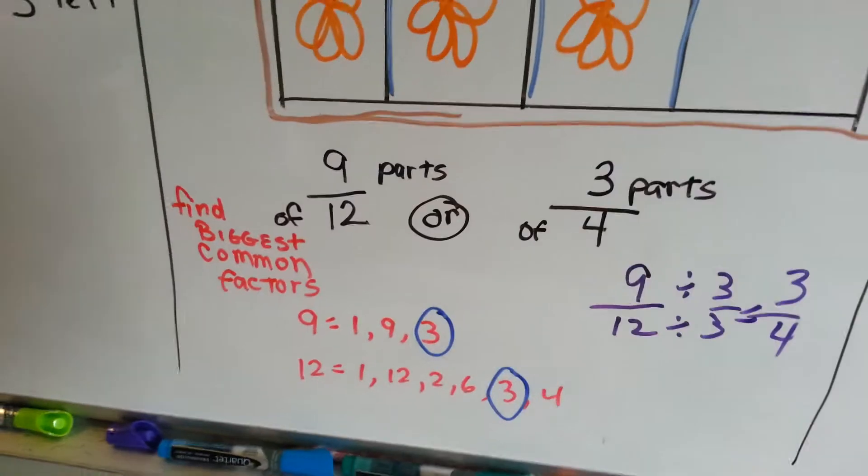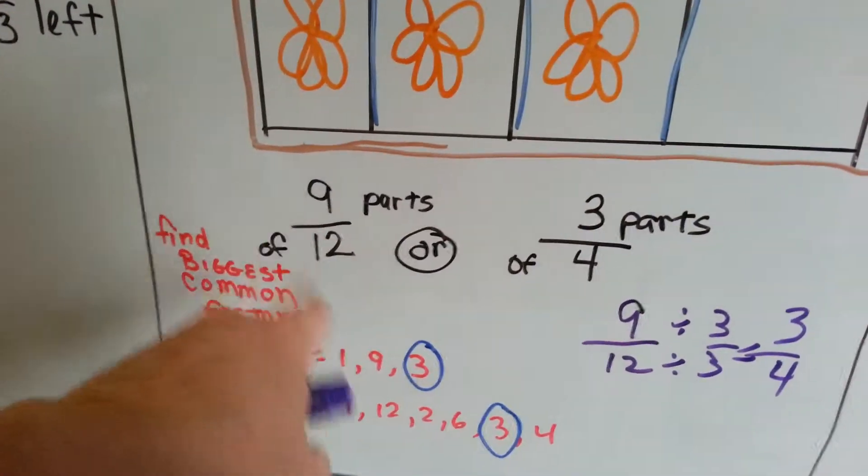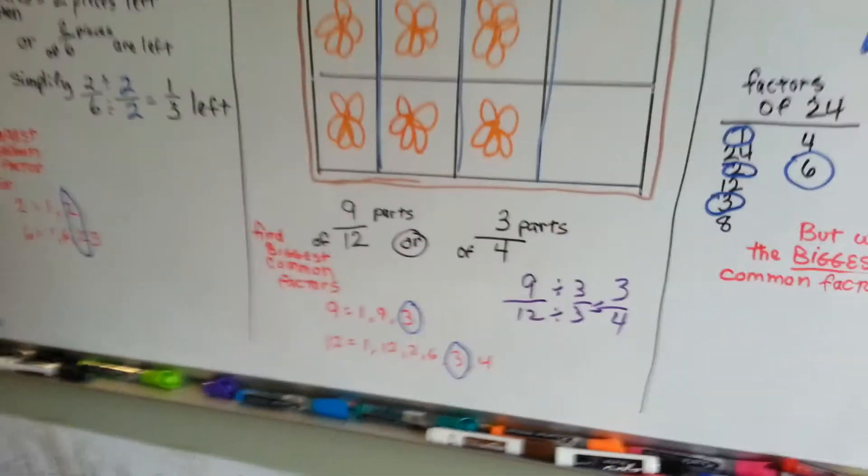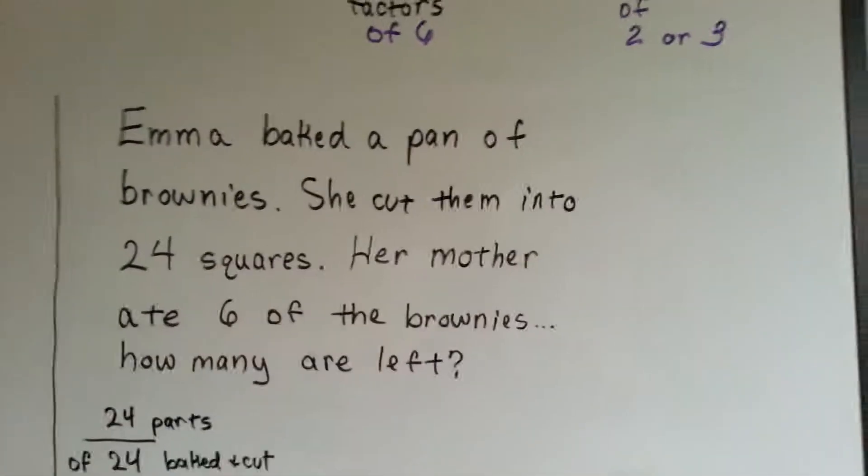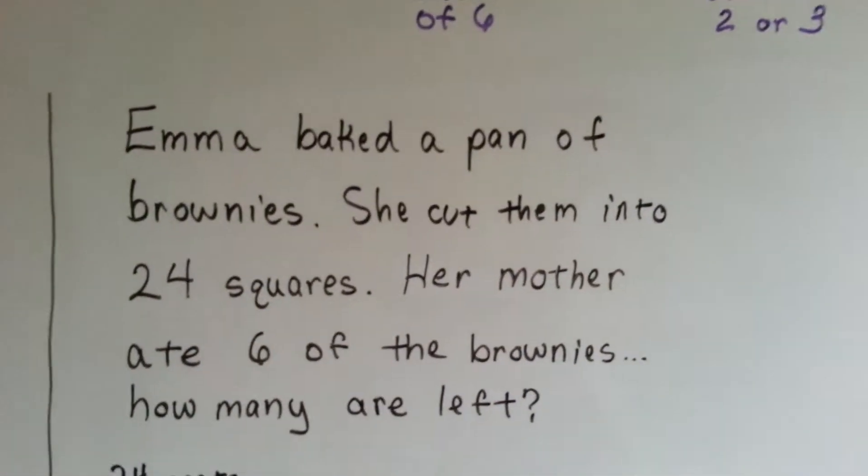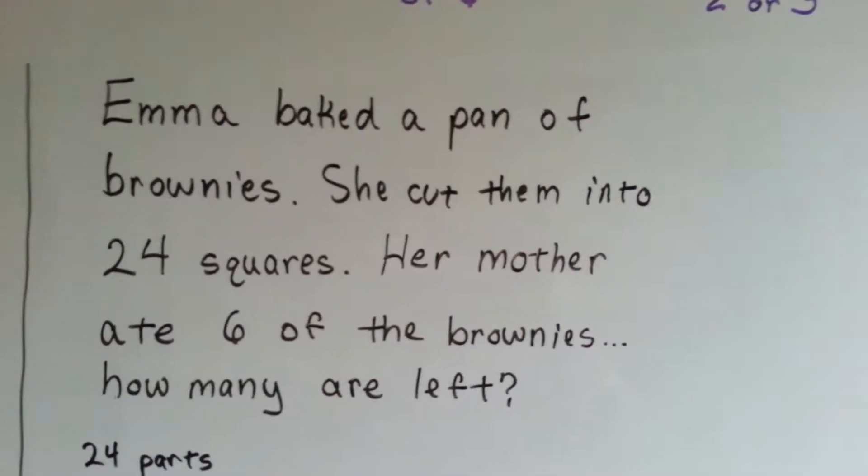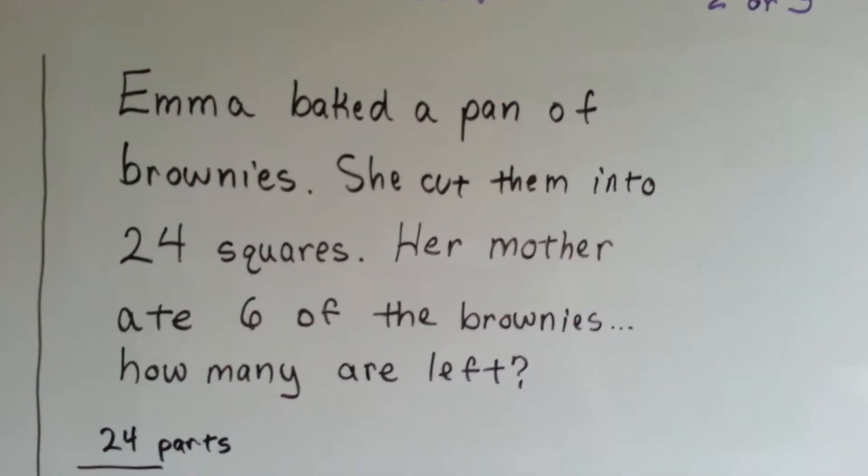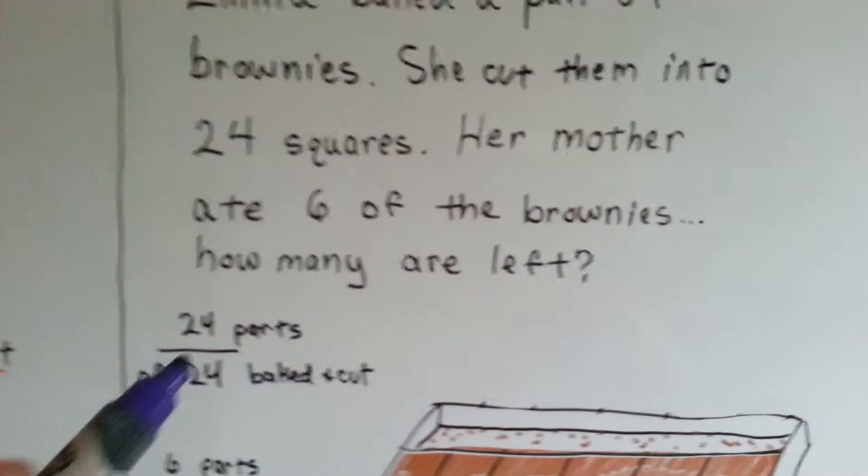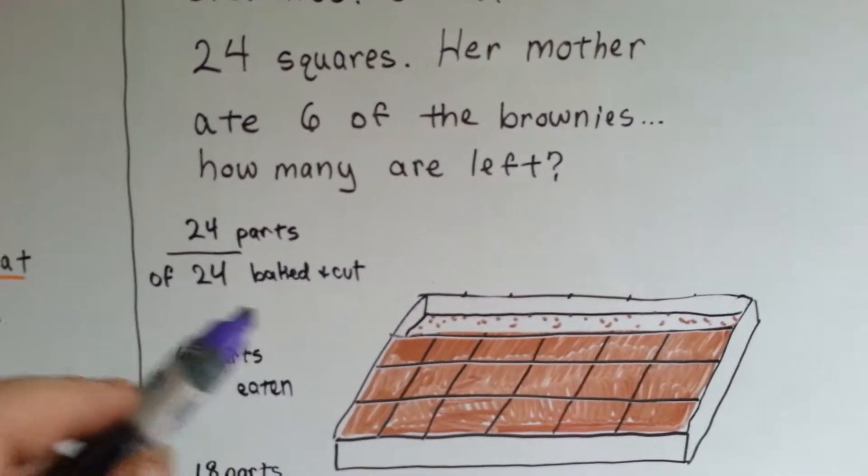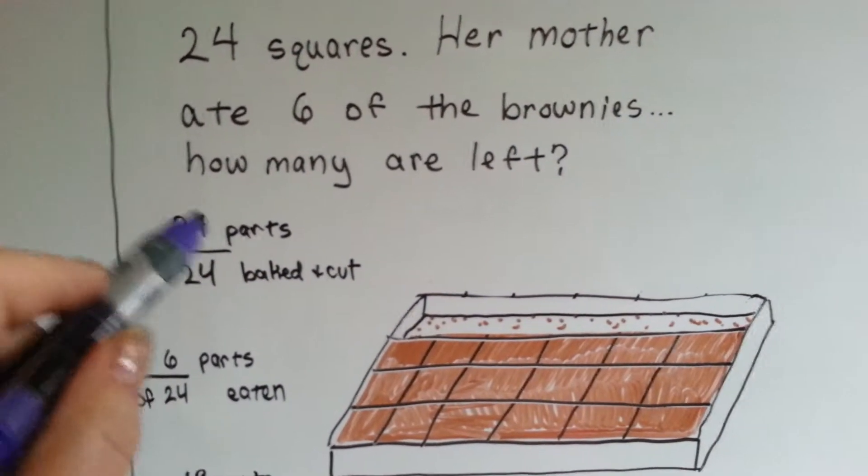It's really important to know what common factors they have because that will help us to divide it. Alright, here's our last one. Emma baked a pan of brownies. She cut them into twenty-four squares. Her mother ate six of the brownies.